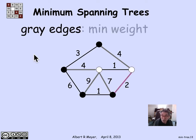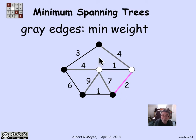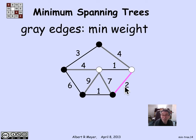Among the gray edges, I pick the one with minimum weight. The gray edges have weights 4, 4, 9, 7, and 2. The minimum weight gray edge has weight 2, so I choose that to start building my tree.